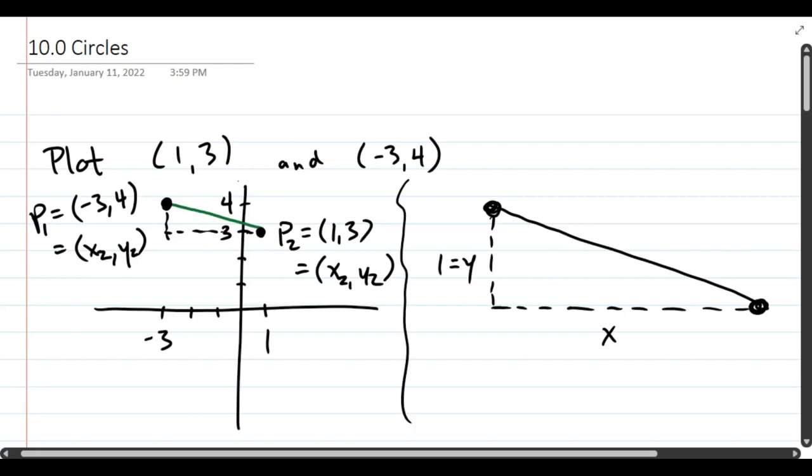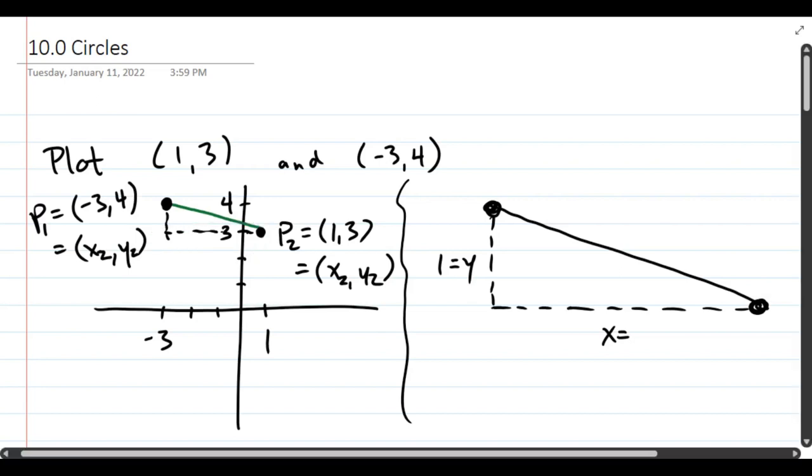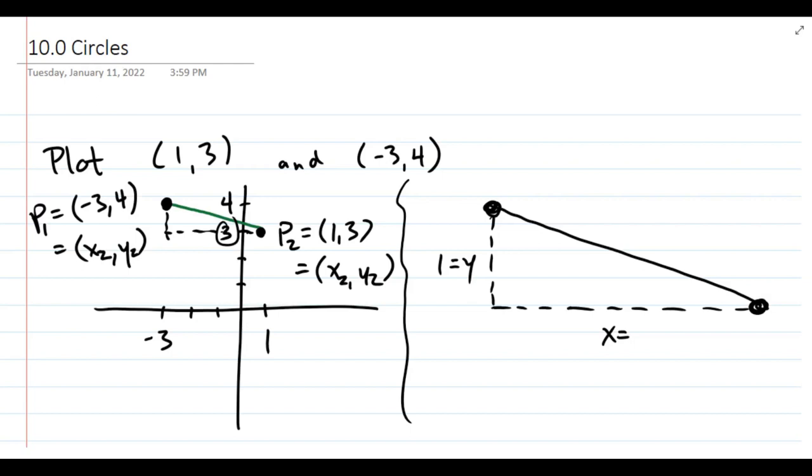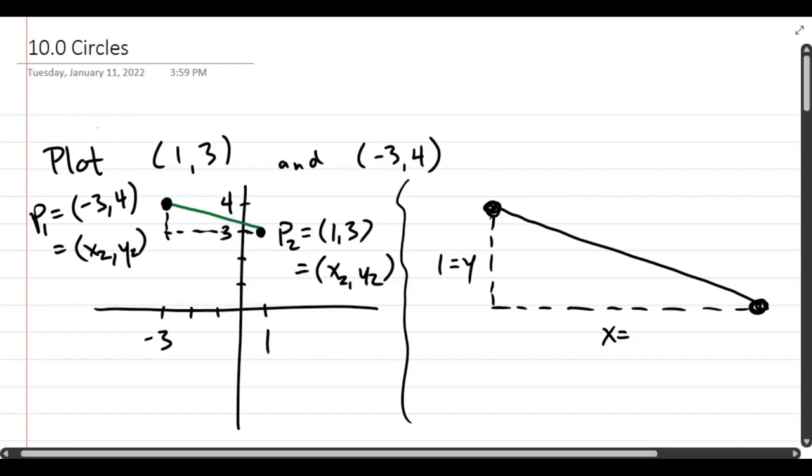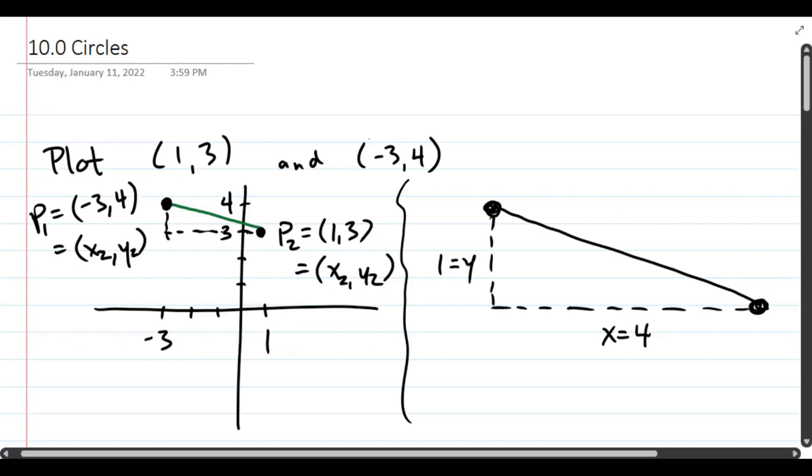Now the x, the horizontal, we're looking here. How long is that line? Don't look at the 3. That's the y coordinate. But if you look, we go from negative 3 to positive 1. So between those, the length will be 4. So x will equal 4.